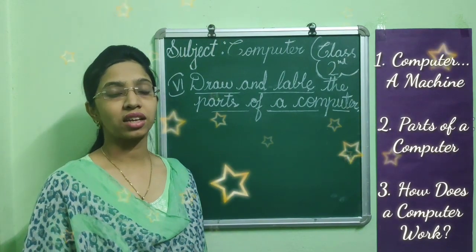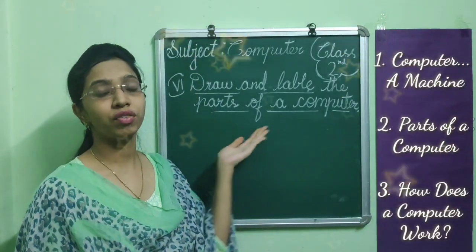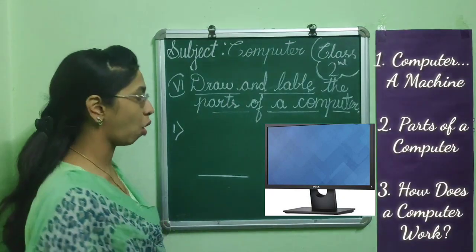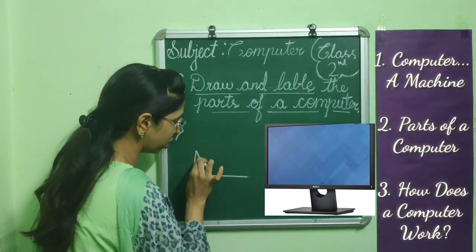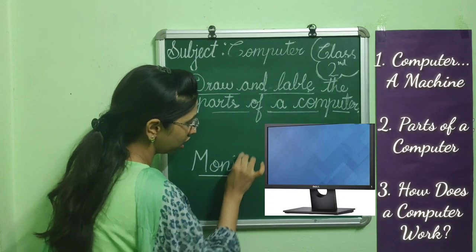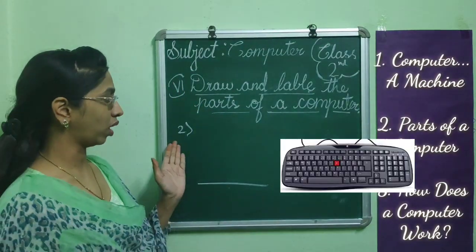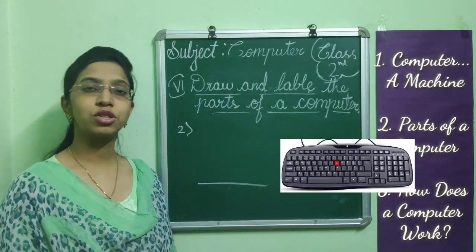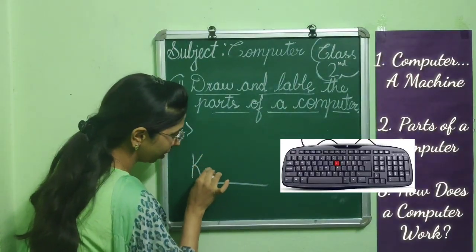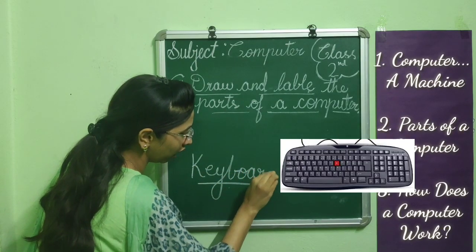Let us start with last bit, sixth bit: Draw and label the parts of a computer. This part of computer is known as monitor, spelling of monitor: M-O-N-I-T-O-R. Second one, this part of computer is known as keyboard, spelling of keyboard: K-E-Y-B-O-A-R-D.